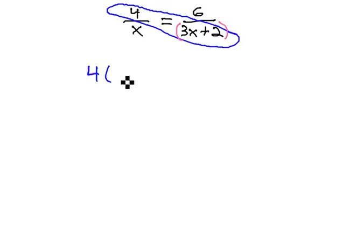We now have 4 times the 3x plus 2 must be equal to the other diagonal, 6 times x.